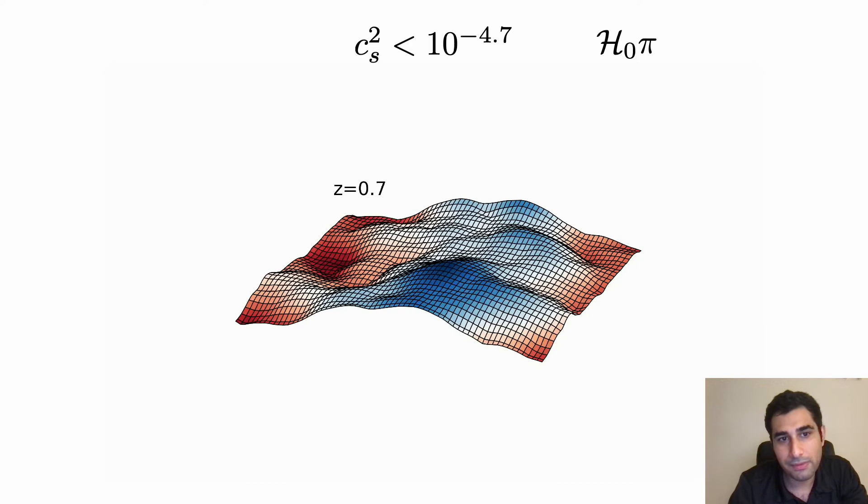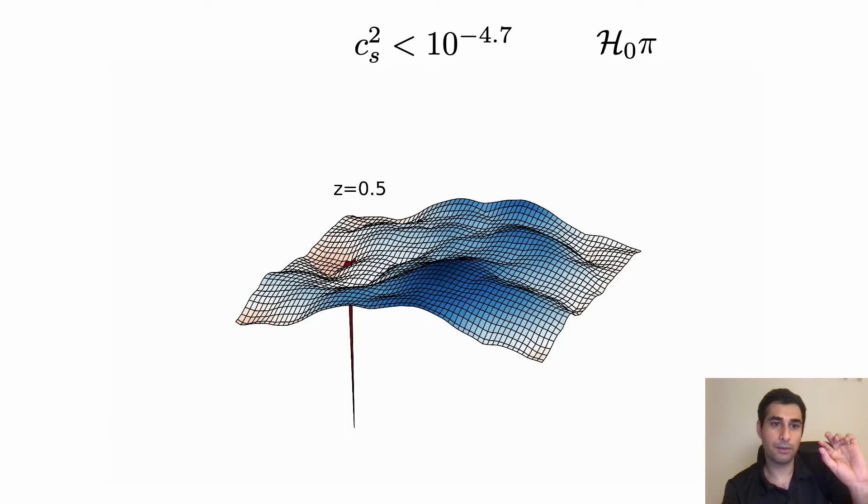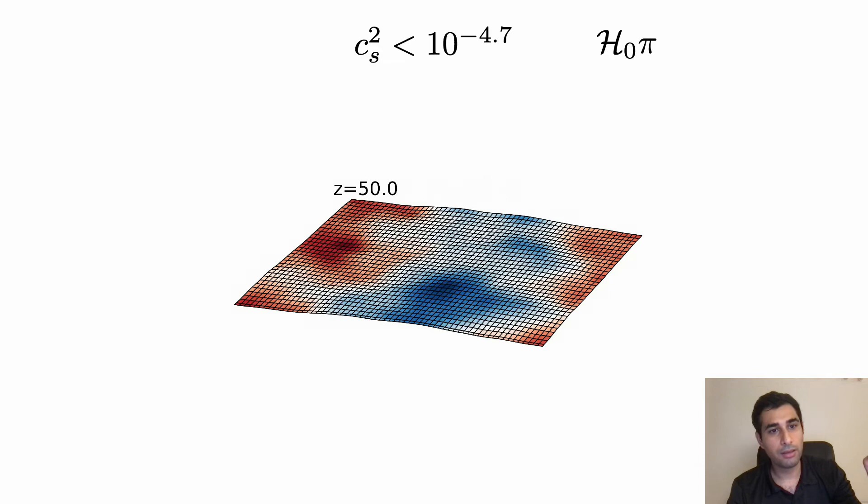But very suddenly at a very specific redshift at a point an instability occurs. I mean the scalar field goes to infinity suddenly. And as you can see at the other points nothing happens but at this special point we have a blow-up. I mean if you look at the time before that everything is fine and then suddenly this instability is generated.